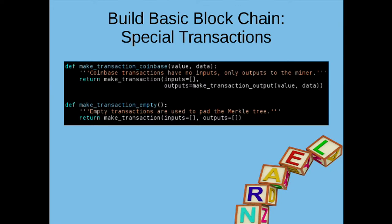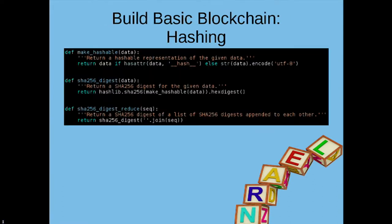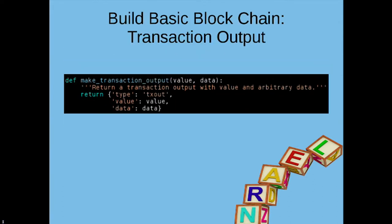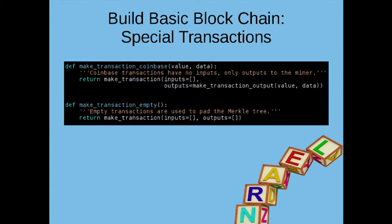The Coinbase transaction is simply the first transaction in a block and it has no inputs. We've encoded that straightforwardly — a function called makeTransactionCoinbase receives a value and data, indicating how much we're going to generate, and it has no inputs. We also make a special function to make an empty transaction with no inputs and no outputs, which is generally invalid, but we'll see why that's useful shortly.